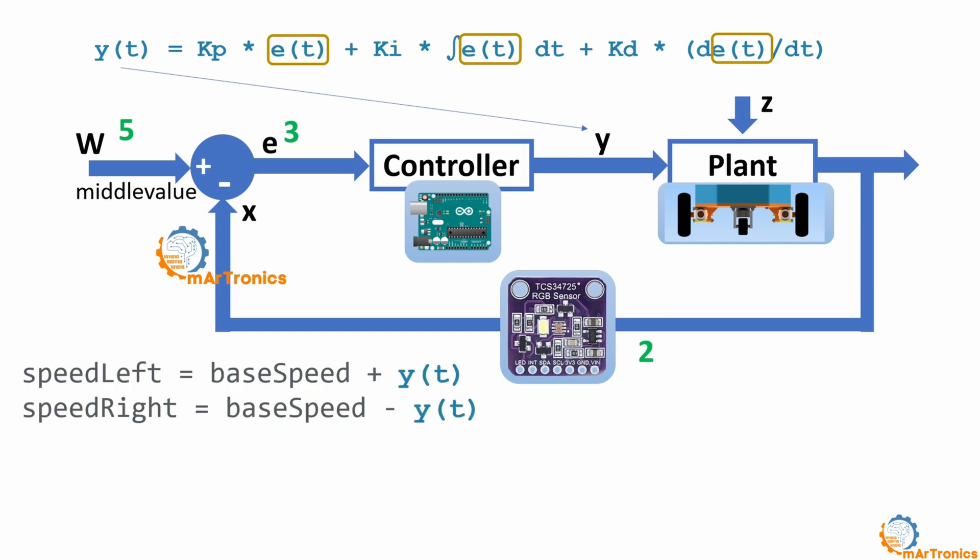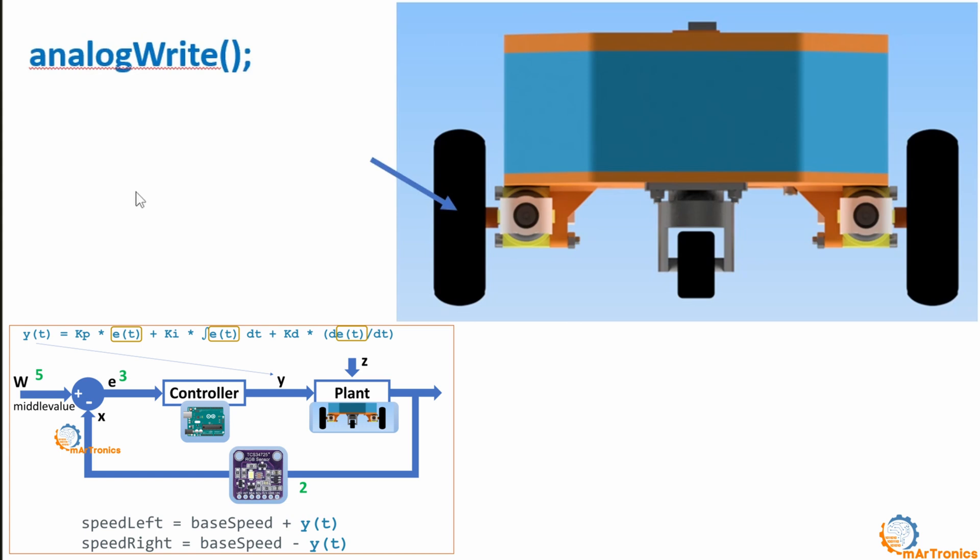We change the speed of the two motors according to the value of y or the control output. For the speed of the left motor, we add y, and for the speed of the right motor, we subtract y. In the previous part, I discussed how to control the movement of the robot, rotate the robot, by controlling the speed of the two motors. You can refer to the video to learn more about this. By changing the speed of the motors, the robot's path is changed.